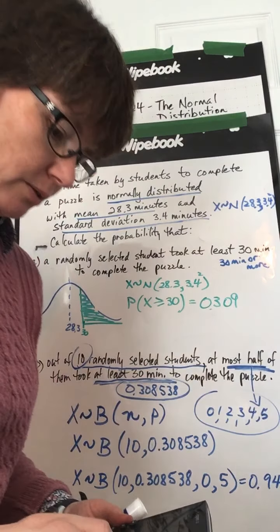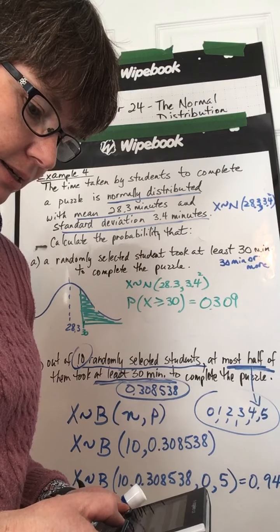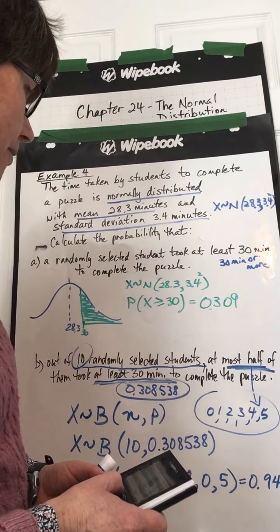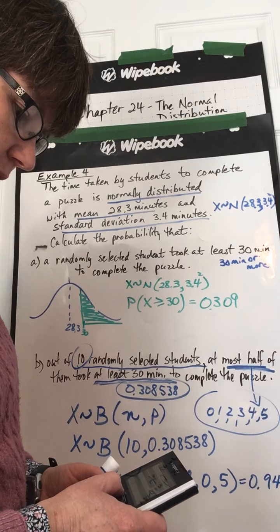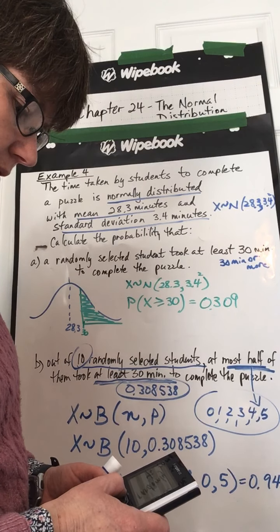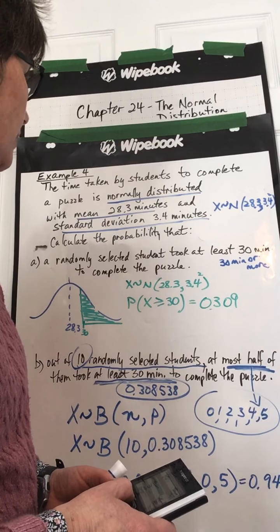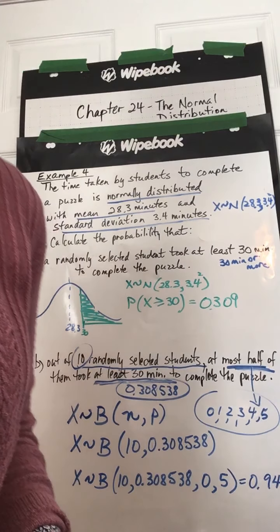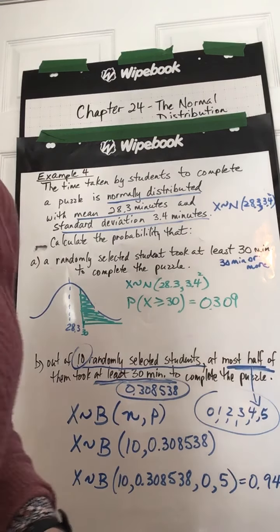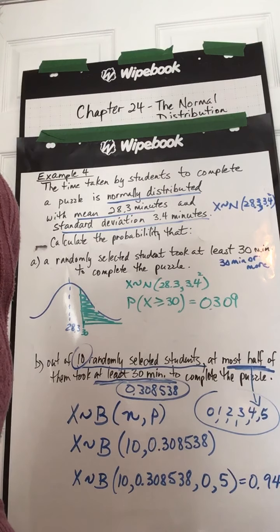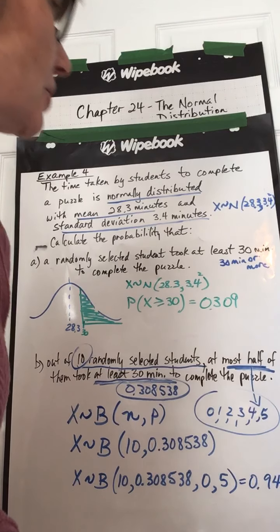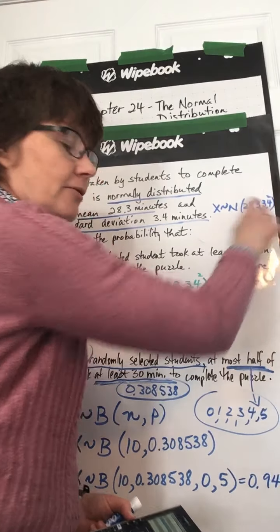Well then, let me go back and look at my calculations. 30, lower bound, upper bound, 28.3, 3.4. Oh, I did it differently than the textbook. They're using 3.6 standard deviation, and I use 3.4.